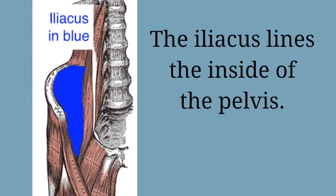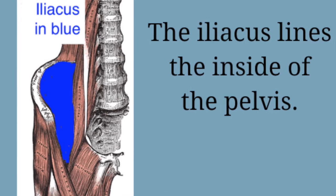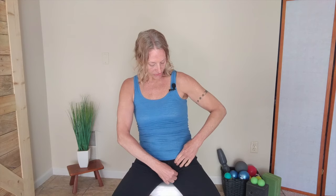It can affect knee problems, hip problems, and low back issues. The iliacus lines the inside of the pelvis on either side. It comes down through the groin and becomes a kind of conjoined twin with the psoas — the psoas comes from along the spine, the iliacus from inside the pelvis — and then both dive deep into the femur.